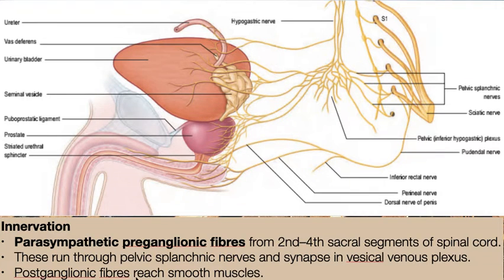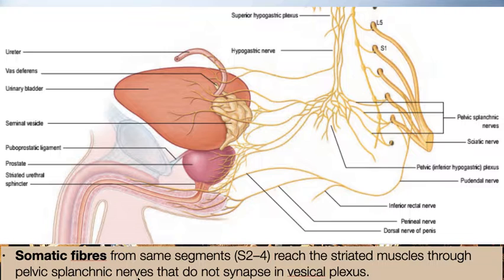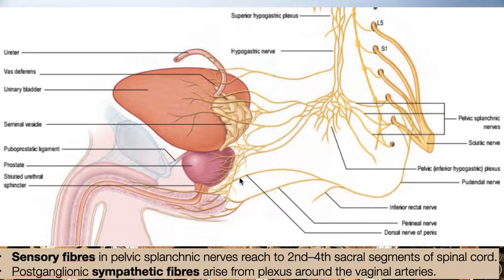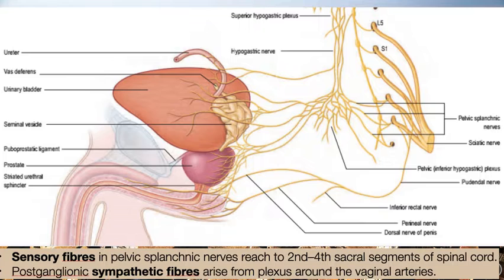The postganglionic fibers reach the smooth muscle cells. The somatic fibers from the same segments S2 to S4 reach the striated muscles through the pelvic splanchnic nerves and do not synapse in the vesical plexus. The sensory fibers in the pelvic splanchnic nerves reach the second to fourth sacral segments of the spinal cord. The postganglionic sympathetic fibers arise from the plexus around the vaginal arteries.